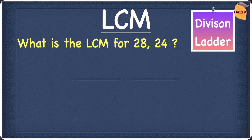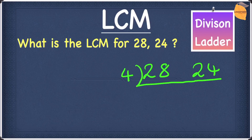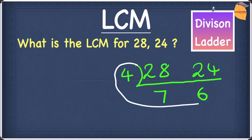Now let's look at this question. The question we have right here is: what is the LCM for twenty-eight and twenty-four? Let's once again use the division ladder. So let's start off by writing twenty-eight and twenty-four in the division ladder. The common factor between twenty-eight and twenty-four is four, because twenty-eight divided by four is seven and twenty-four divided by four is six. We won't go any further because seven and six don't share a common factor. So we stop here and circle four, seven, and six.